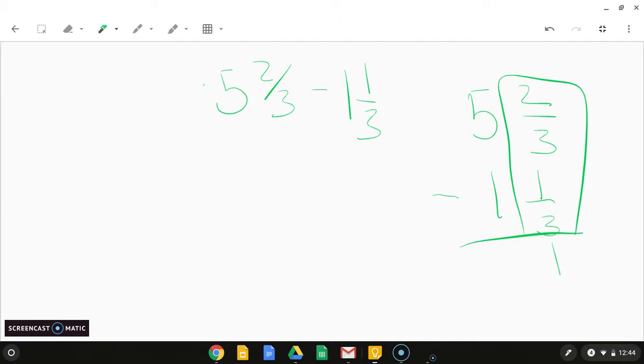Now we're going to subtract. So we have five and two-thirds minus one and one-third. Again, good idea to rewrite it. Okay, so we do the fractions first. Two minus one. That gives us one. And then our three stays the same. Five minus one is four. So our difference is four and one-third.